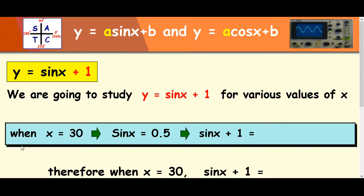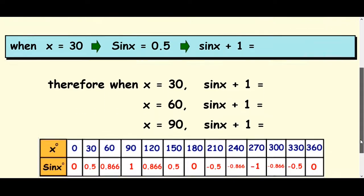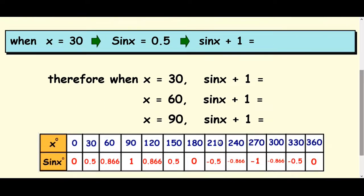So let's look at y equals sin x plus 1. When x is 30 in your normal sine wave, you get 0.5. So sin of 30 is 0.5, but when you're looking at sin of x plus 1, you're doing sin of 30, which is 0.5, but you're adding 1 to it. That just comes out to be 1.5.